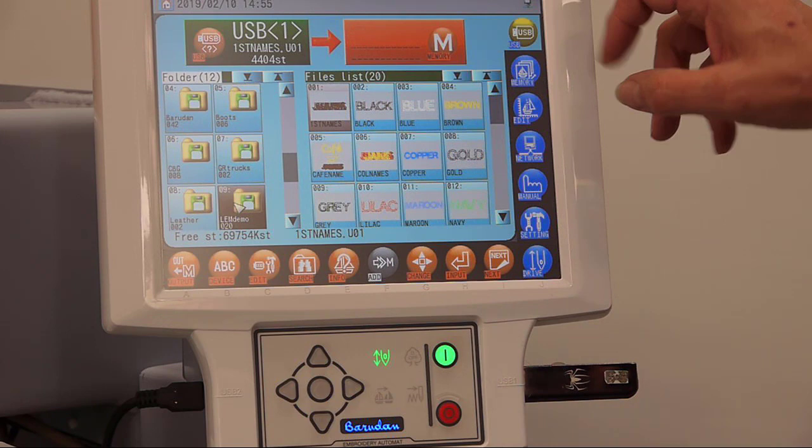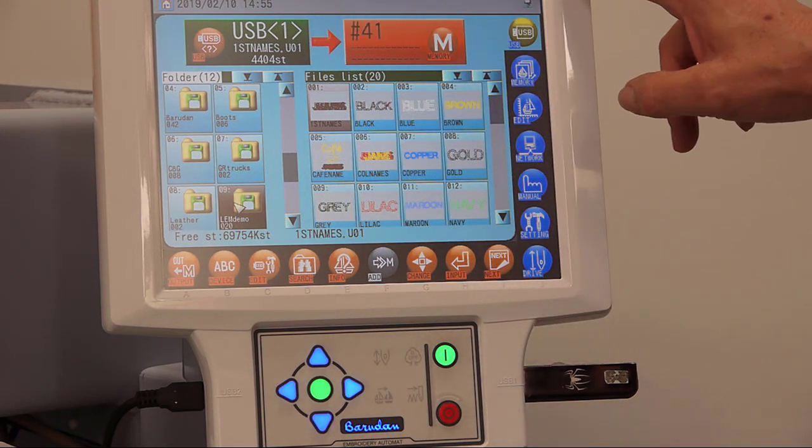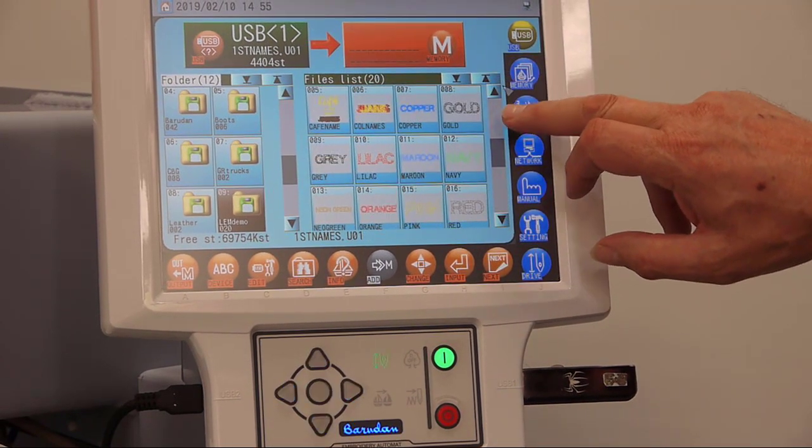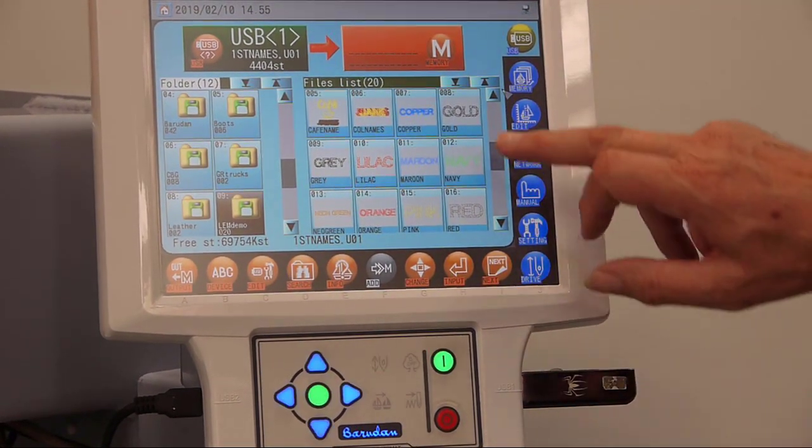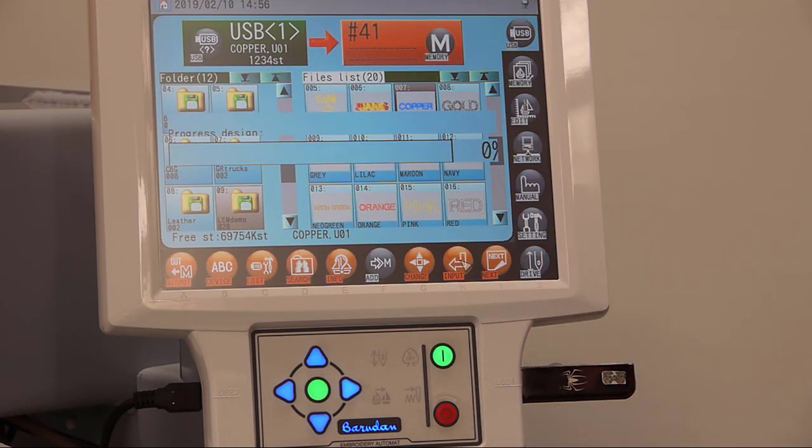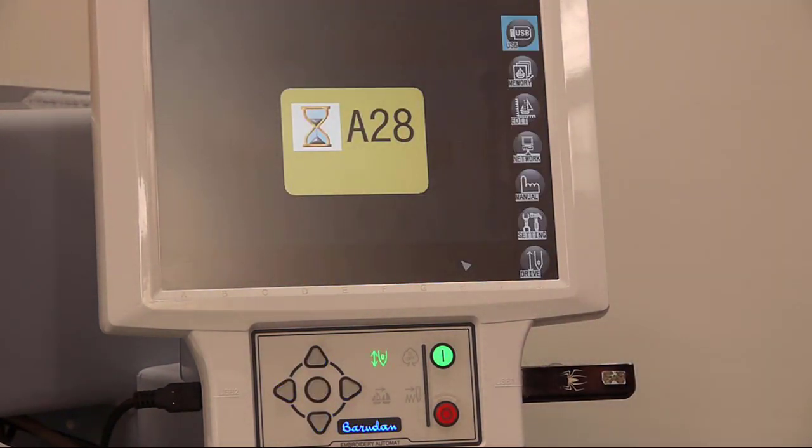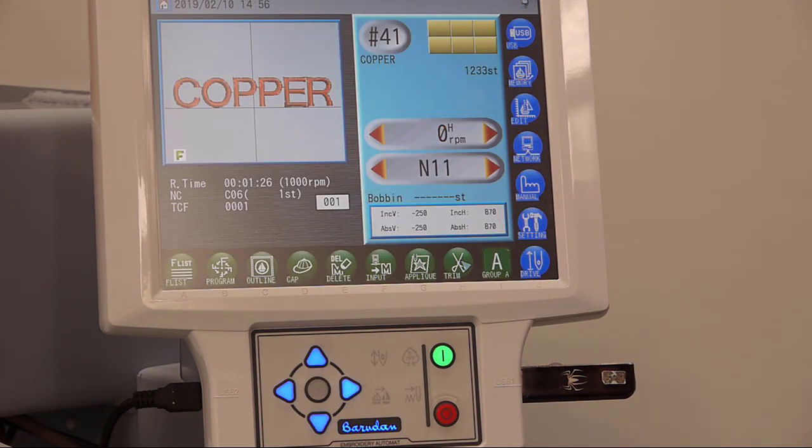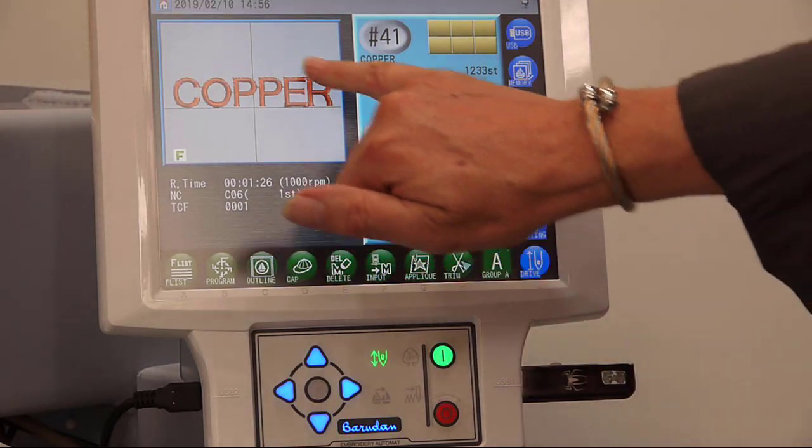I can see all of the designs that I've saved into this folder, and once again I can scroll up and down to find the design that I want. So let's say I want to load copper. I just press that design and input, and that's the design loaded into the memory. You can see it displays on the screen in realistic stitch view.